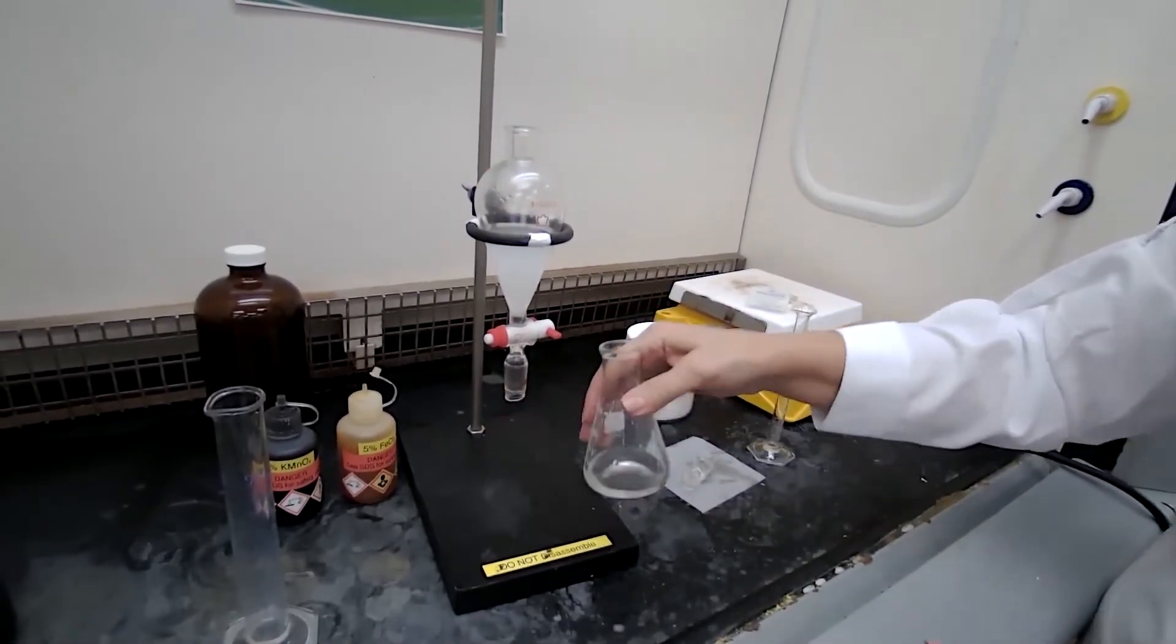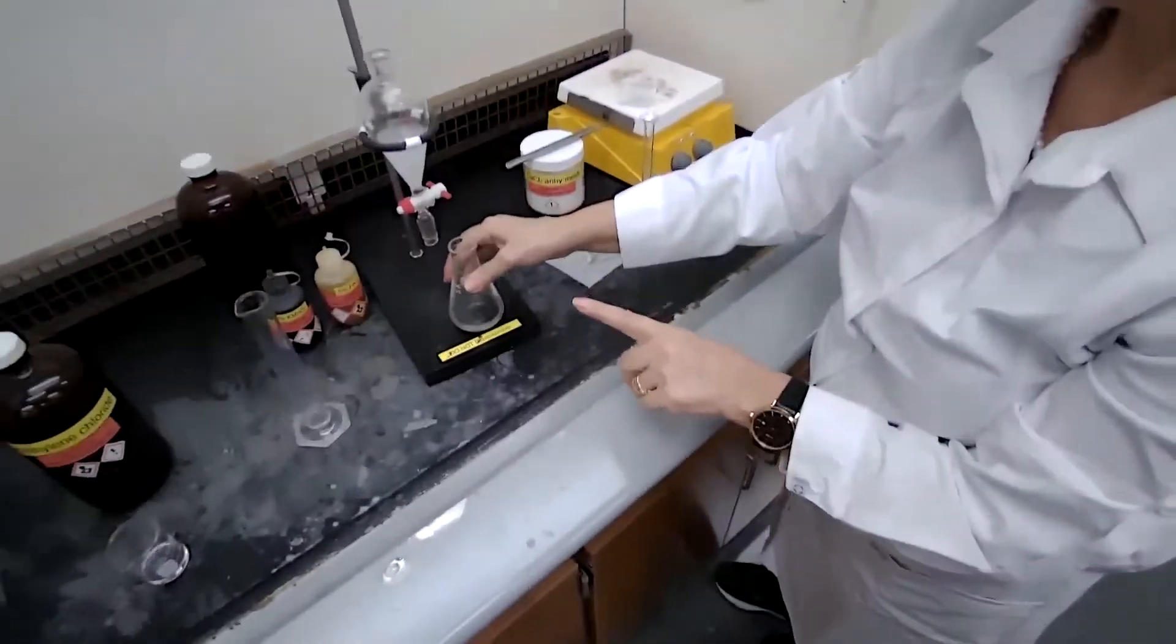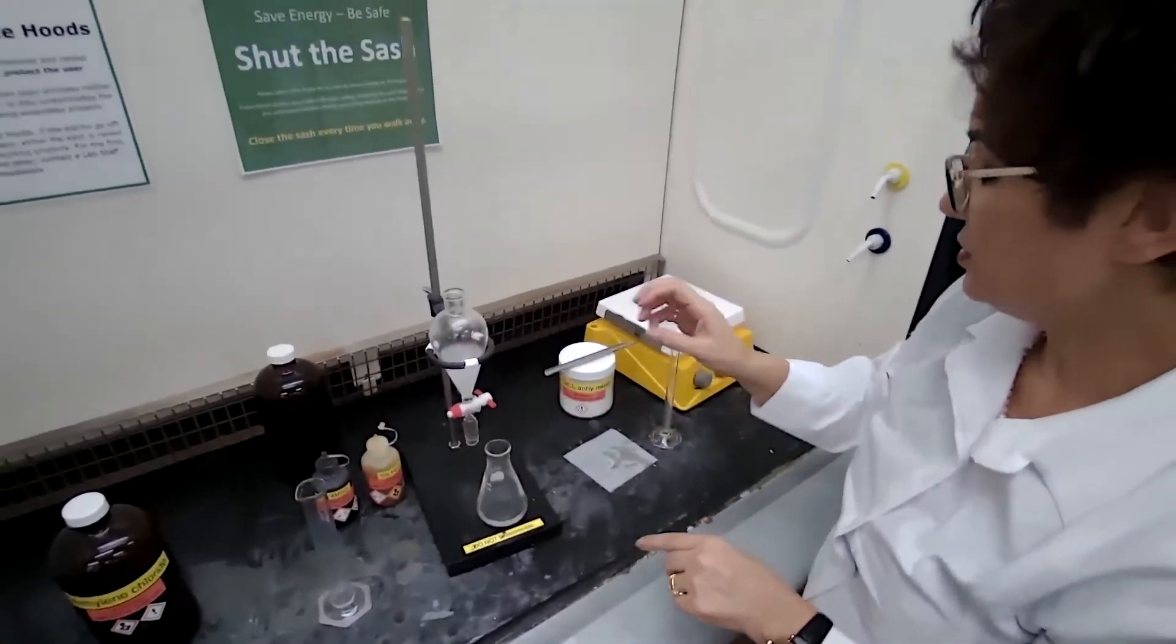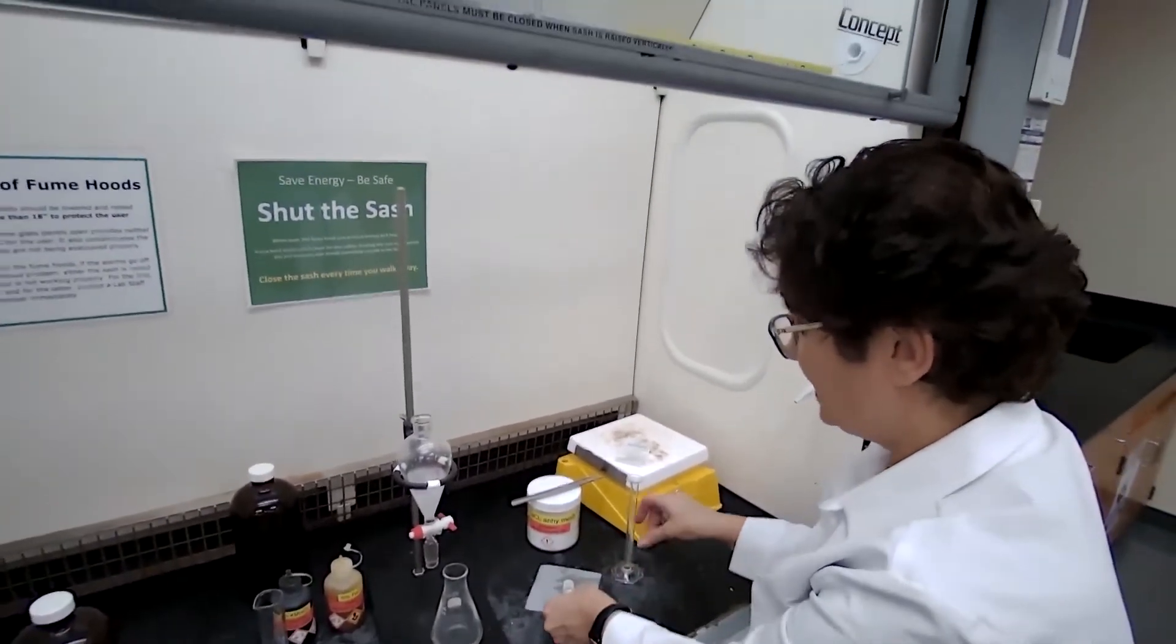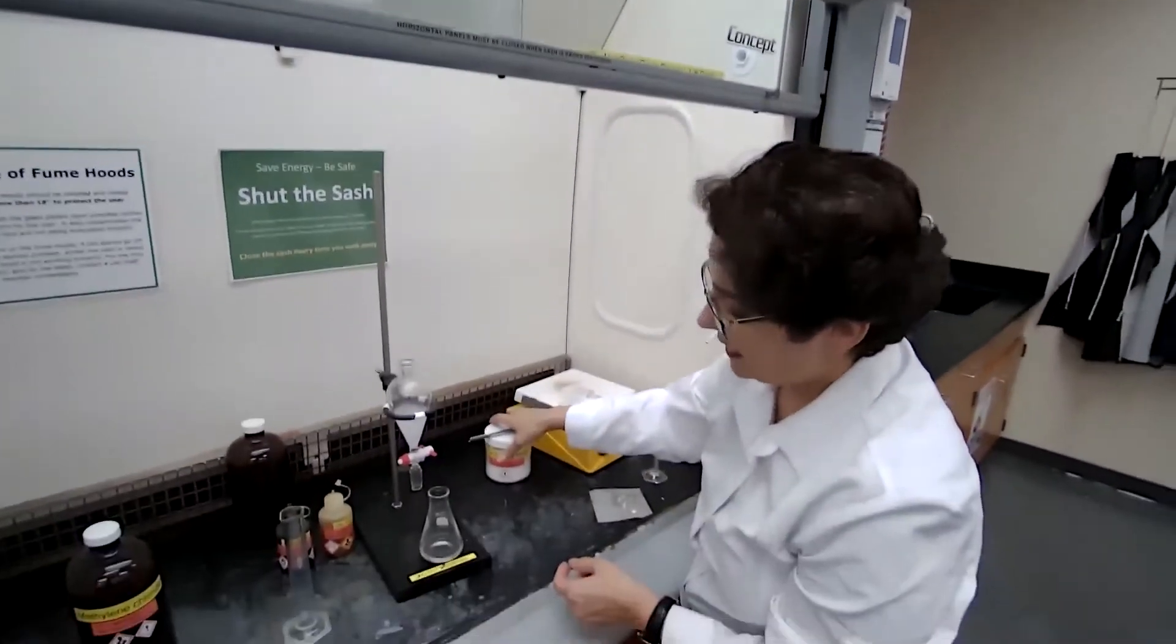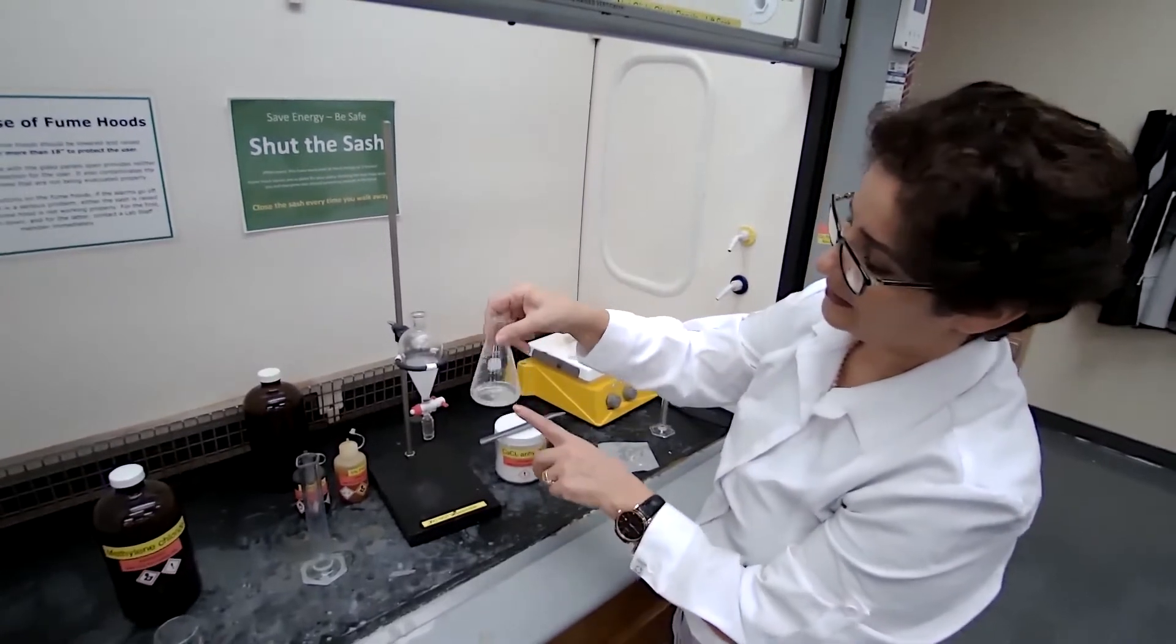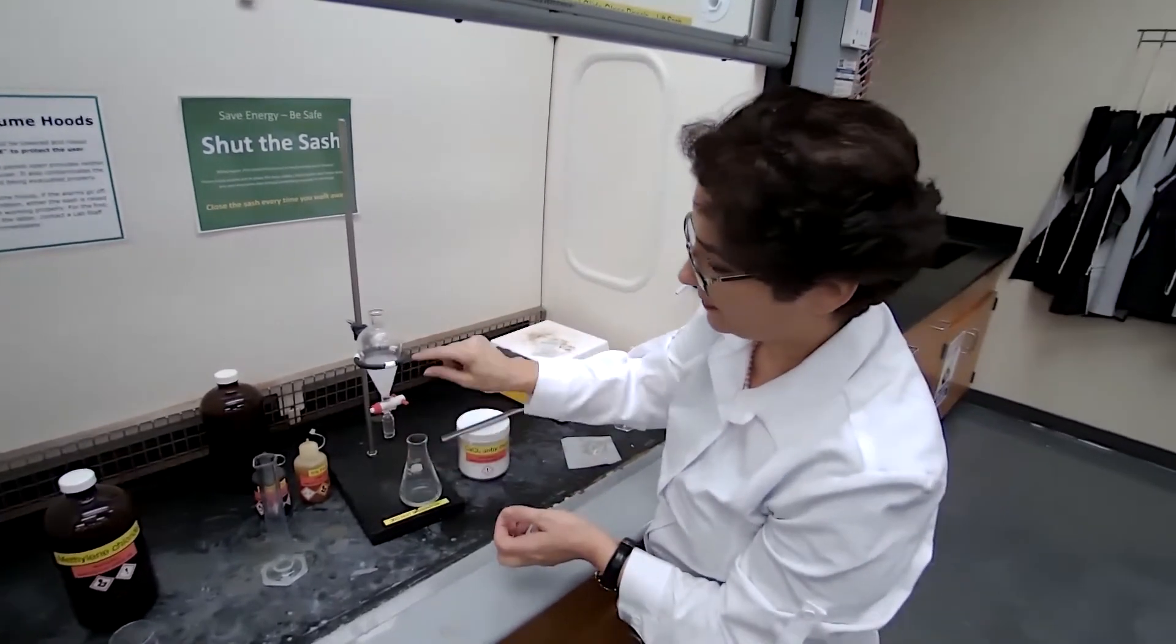Now, what we have in this flask now, it would be methylene chloride plus the oil or eugenol that was extracted or distilled, the steam distilled from the cloves, and some water because you cannot get 100% of the water separated.